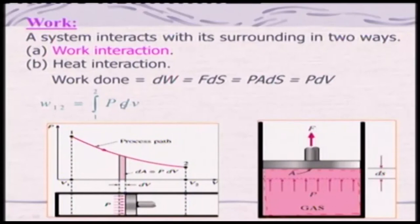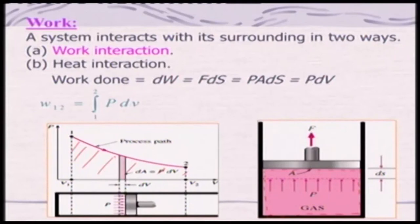If the pressure is remaining constant, you can find the change in volume and compute the work — that is possible only for an isobaric process. For other processes, you must know the relation between pressure and volume. If you look at this integral, it is basically the area under the P-V diagram that gives the work done. In the P-V plot, that area gives the work done.